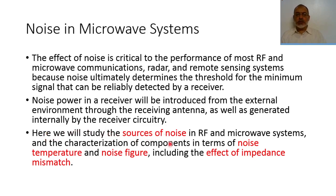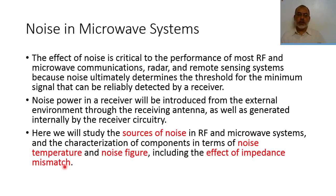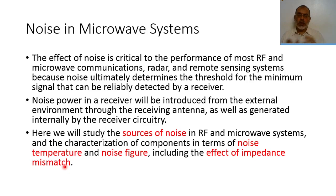Here we will study the sources of noise — what are the sources of external and internal noise in RF and microwave systems — and the characterization of components in terms of noise temperature, noise figure, and the effect of impedance mismatch. These are the main topics of this chapter: what is the noise source, what is meant by equivalent noise temperature, what is meant by noise figure, and what is the effect of impedance mismatch on the noise of the complete circuit.